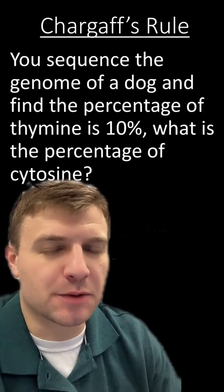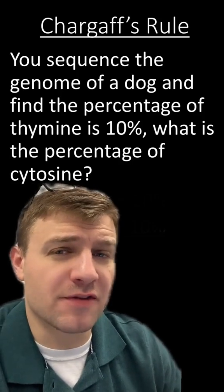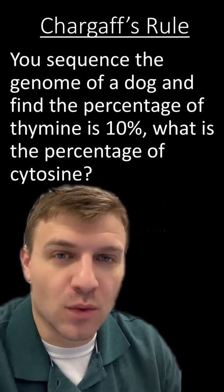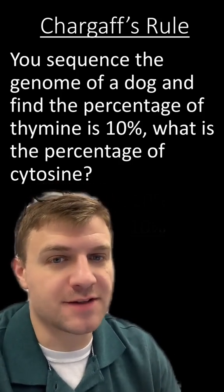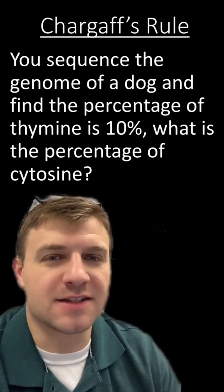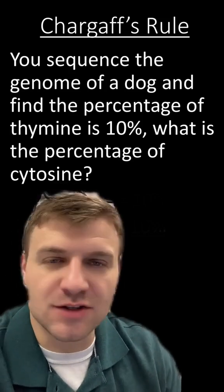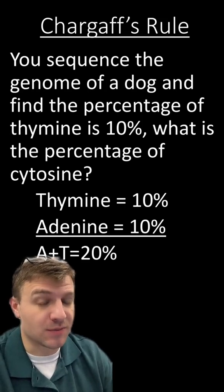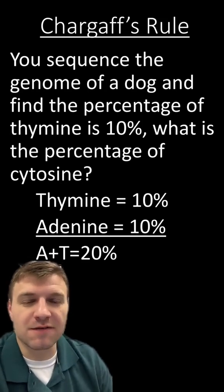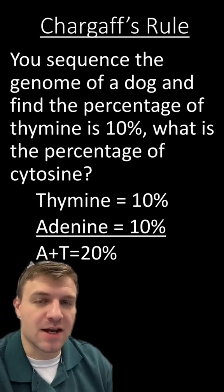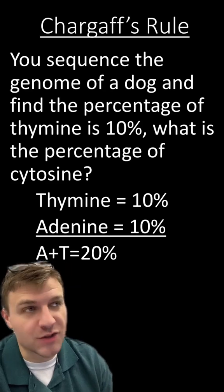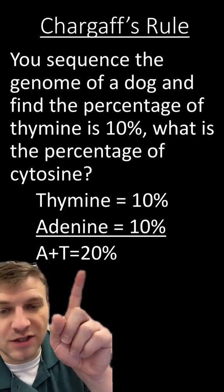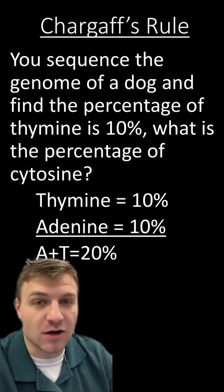This next question is going to be a little bit more difficult. You sequence the genome of a dog and find the percent of thymine is 10%. What is the percent of cytosine? This is more difficult because T's and C's don't go together. However, T's and A's do. We know the percent of thymine is 10%, which means the percent of adenine is also going to be 10%.